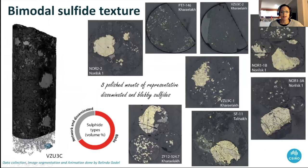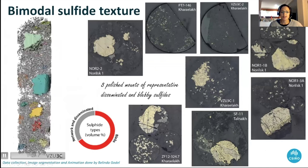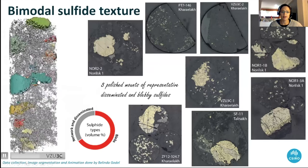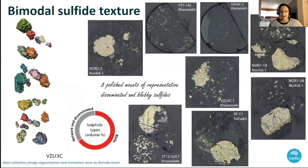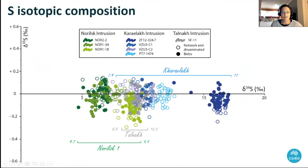Here are photos of the samples that we looked at. These are polished reflected light images. And here there's just a 3D CT scan of one of the samples where we can really clearly see those blebby sulfides I was talking about. In gray here you have the interstitial sulfides. We had three samples from Kharaelakh, three from Norilsk-1, and one from the Talnakh intrusion.